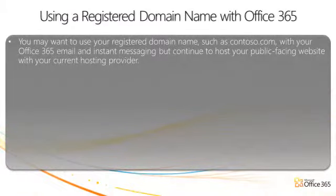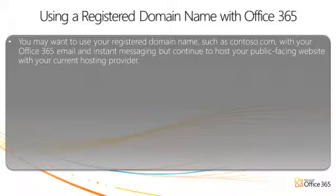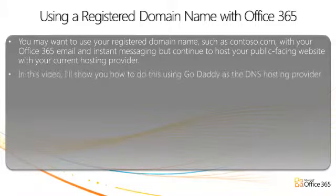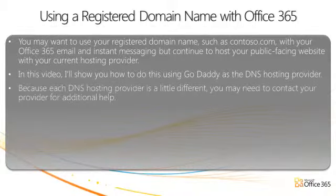You may want to use your registered domain name, such as contoso.com, with your Office 365 email and instant messaging, but continue to host your public facing website with your current hosting provider. I'll show you how to do this using GoDaddy as the DNS hosting provider. Because each DNS hosting provider is a little different, you may need to contact your provider for additional help.